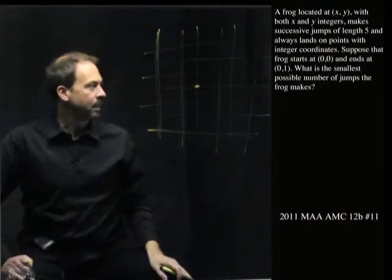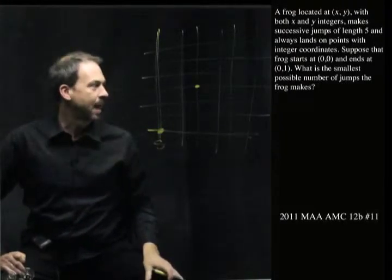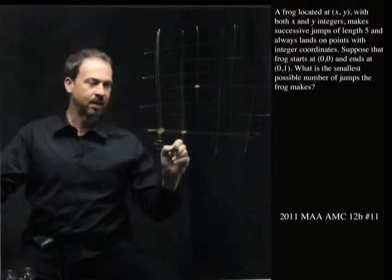What's the question asking? It says, suppose the frog starts at the origin, starts here, so that's the start, and ends at the point (1,0), which is just 1 unit to the right. So that's the end.